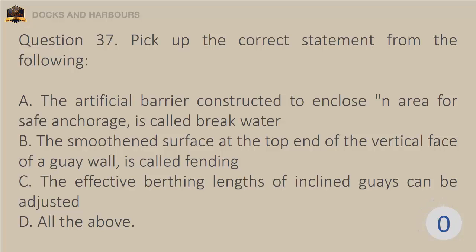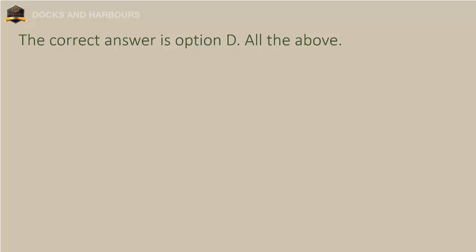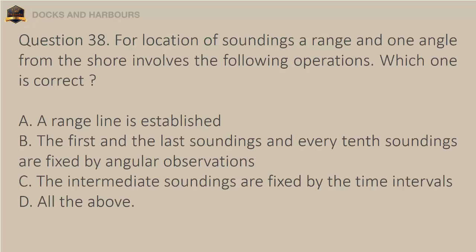Question 38. For location of soundings, a range and one angle from the shore involves the following operations: a. A range line is established. b. The first and the last soundings and every tenth sounding are fixed by angular observations. c. The intermediate soundings are fixed by time intervals. d. All the above. The correct answer is option D: All the above.